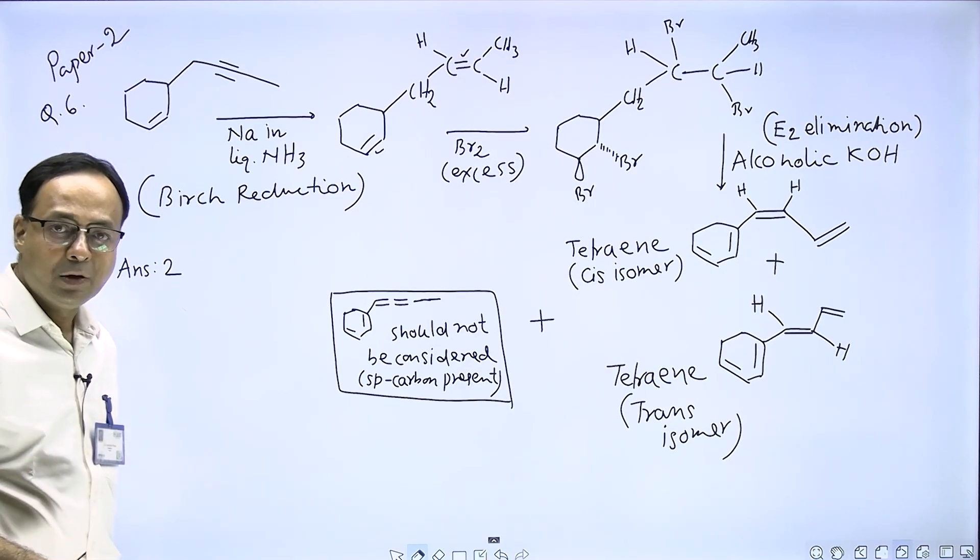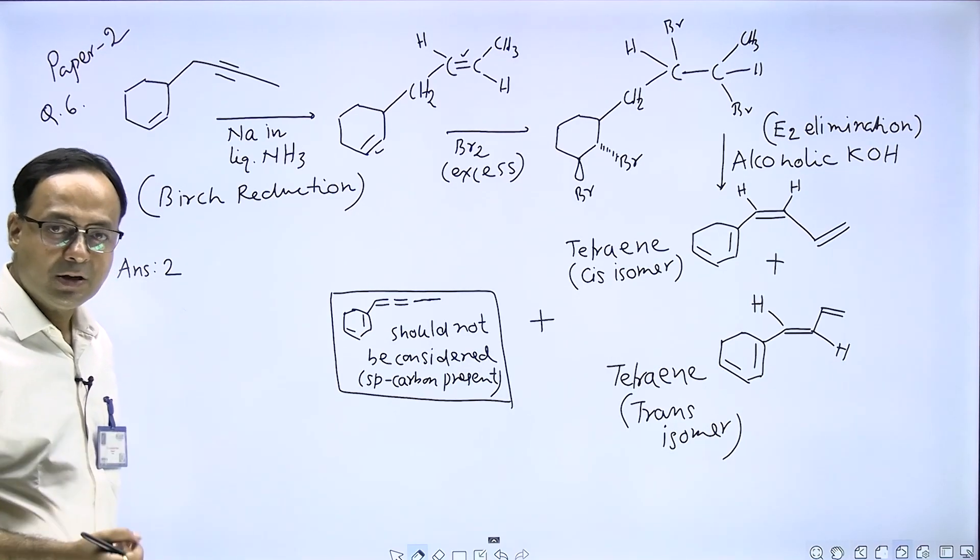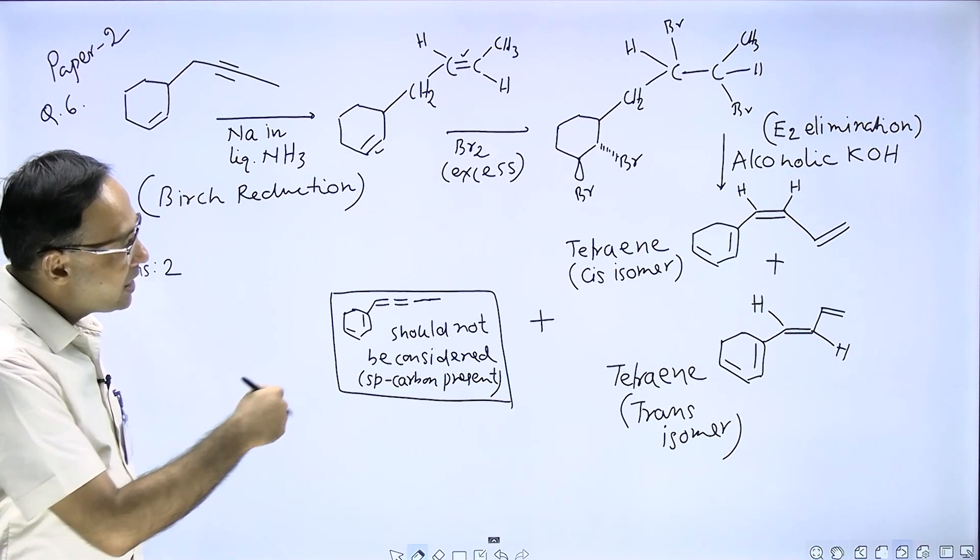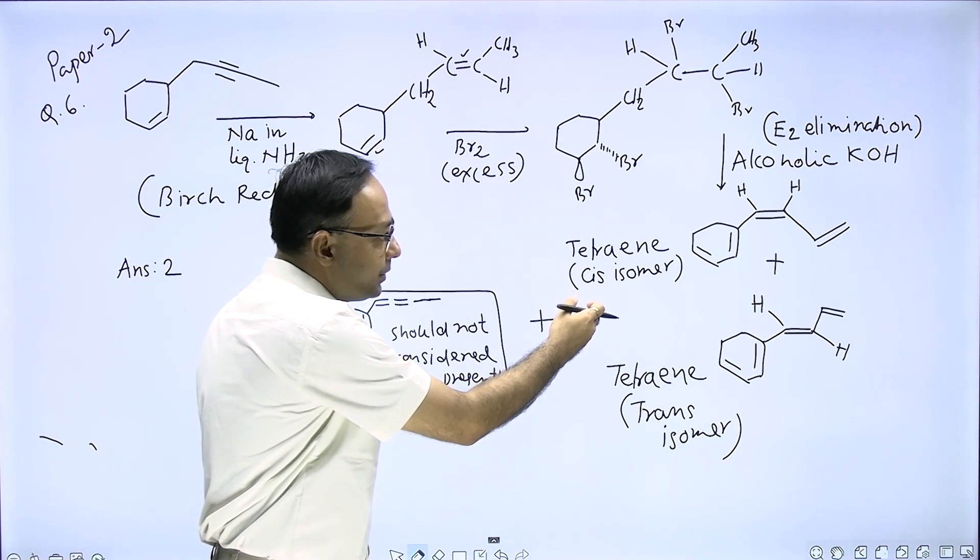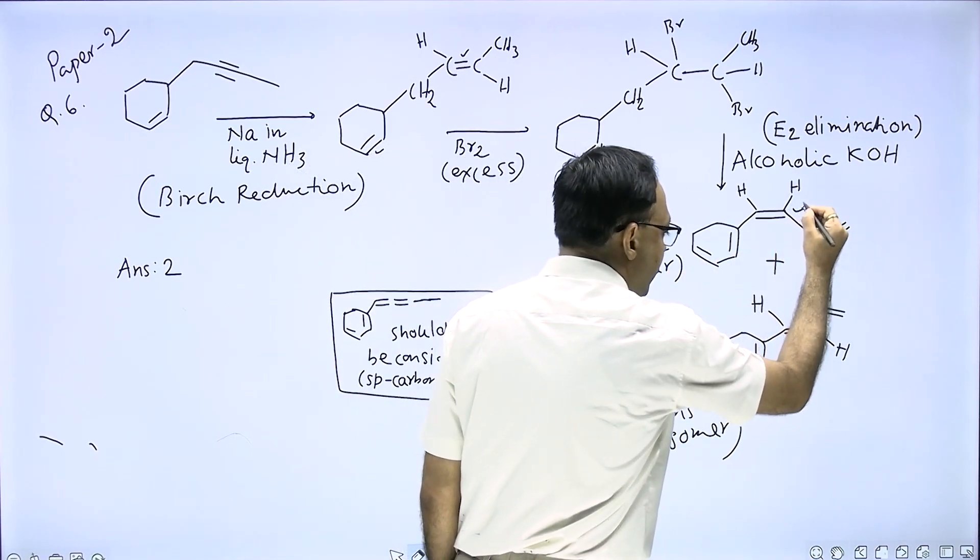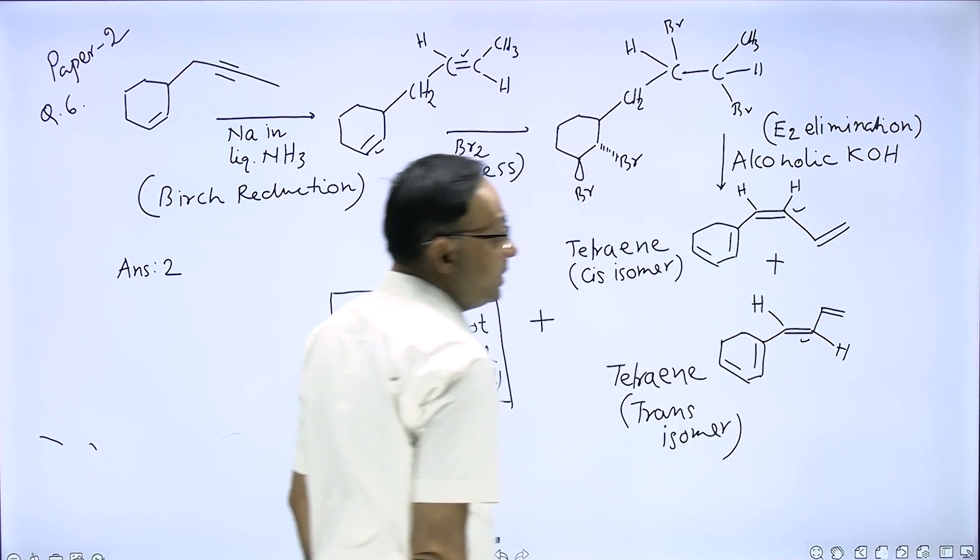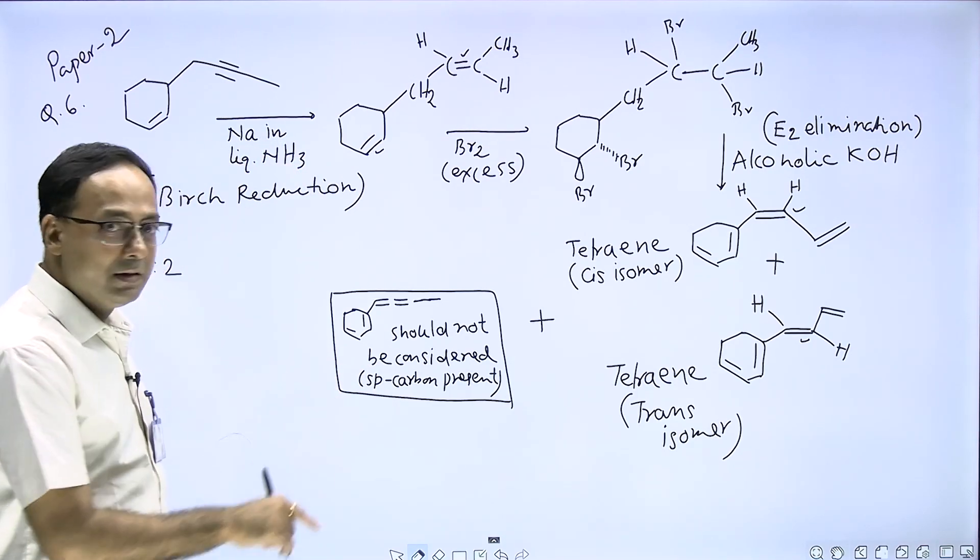This tetrain is a cis isomer and this is the tetrain that is a trans isomer. Two tetrains form which are examples of geometrical isomers.